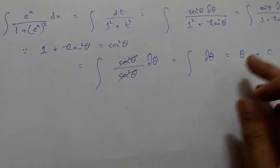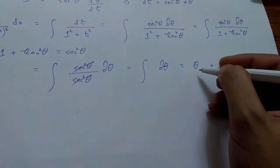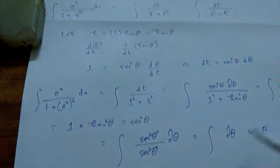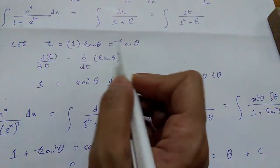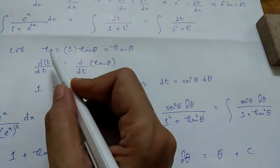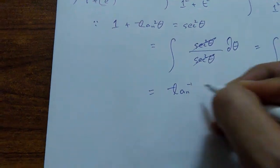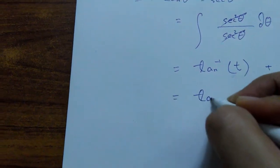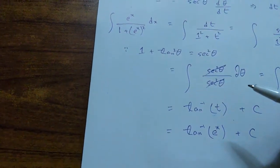Now we restore the variables step by step. From the second substitution, t = tan(θ), so θ = arctan(t). And since t = e^x, the final answer is arctan(e^x) plus a constant C.